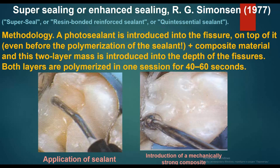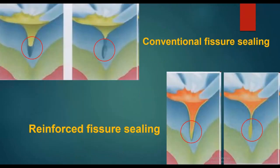In the first picture we see application of sealant, and in the second picture we see introduction of mechanically strong composite. The first picture shows a conventional fissure sealing and the second shows a reinforced fissure sealing.